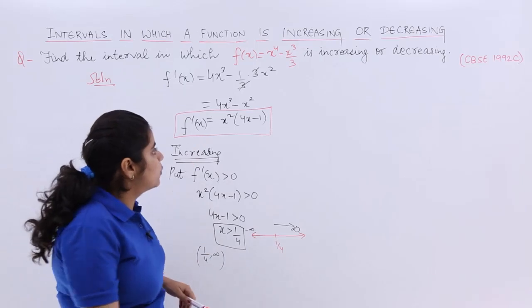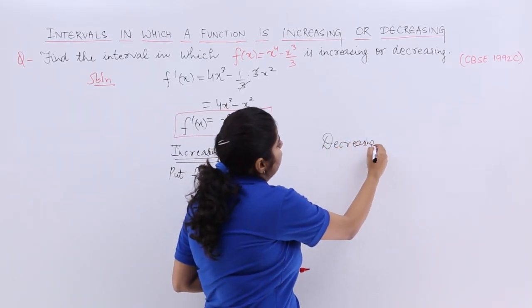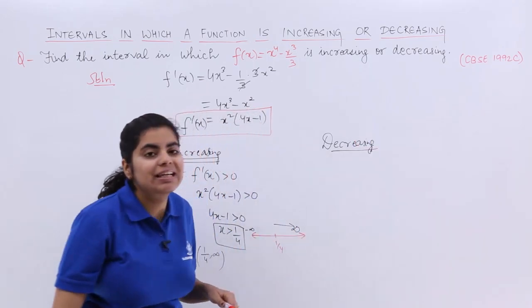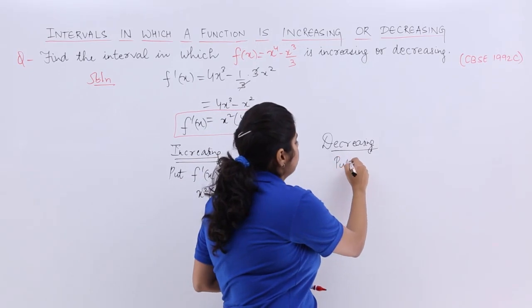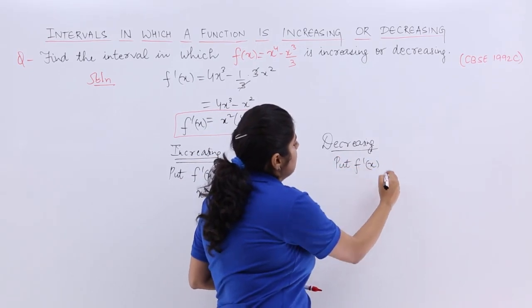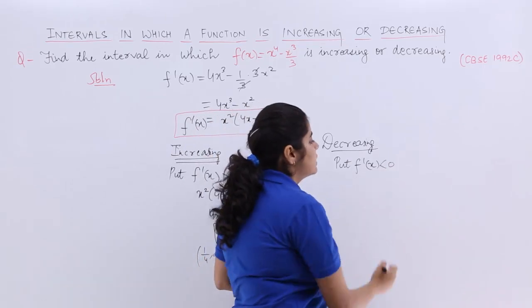Now let us put the heading as decreasing and you definitely know now how to go about it. Decreasing means the remaining values and for that you have to put f'(x) as what? Earlier it was greater than 0. Now simply it is less than 0.